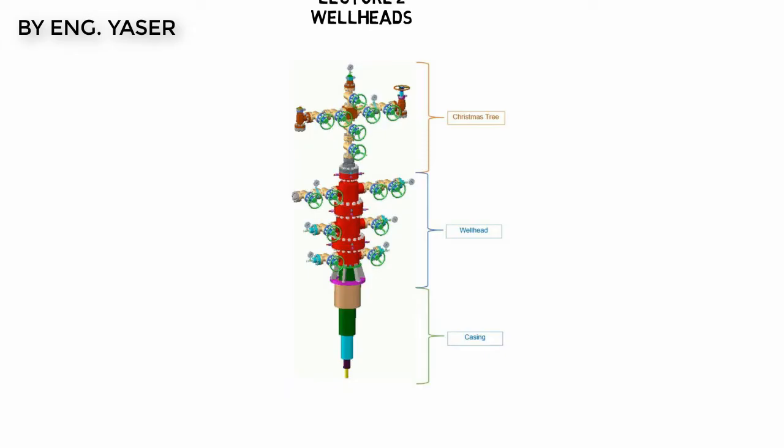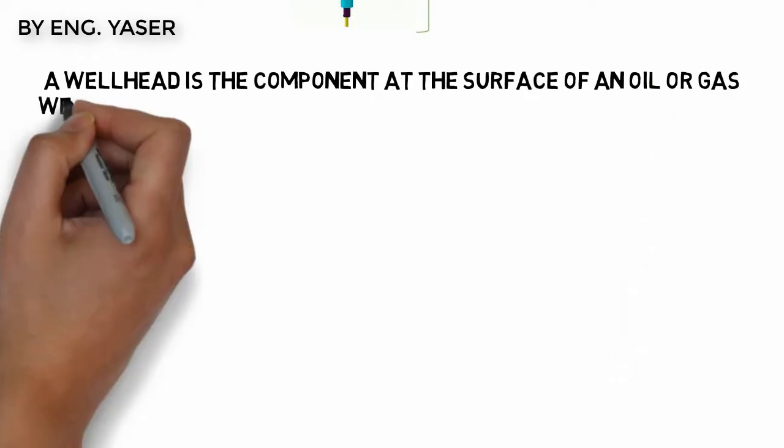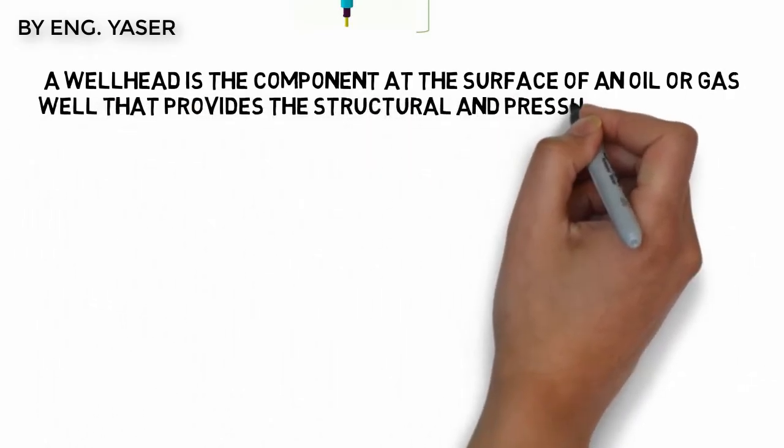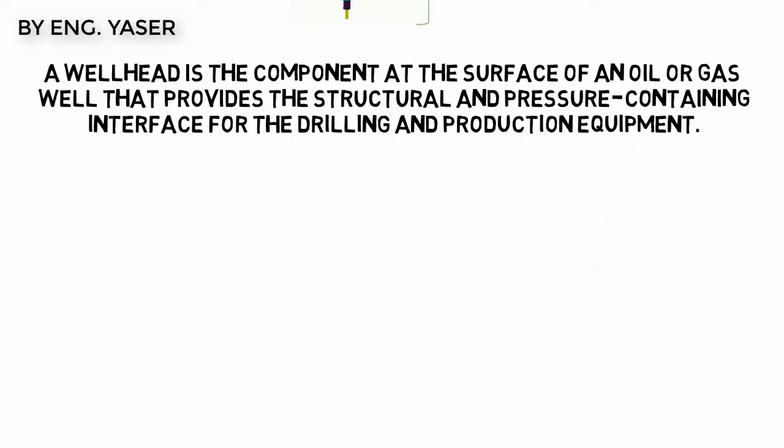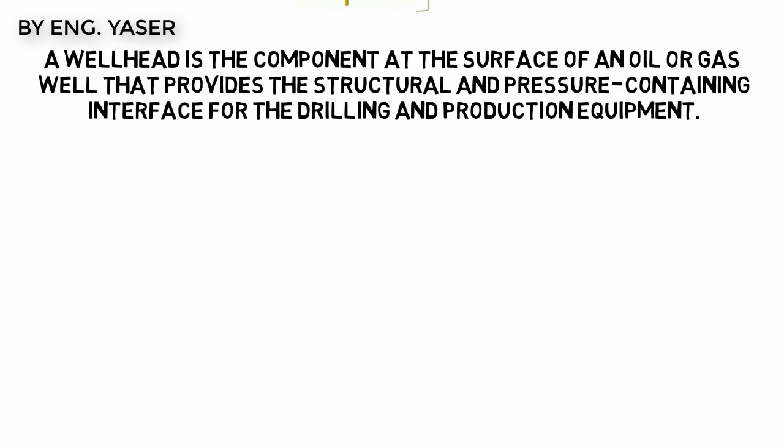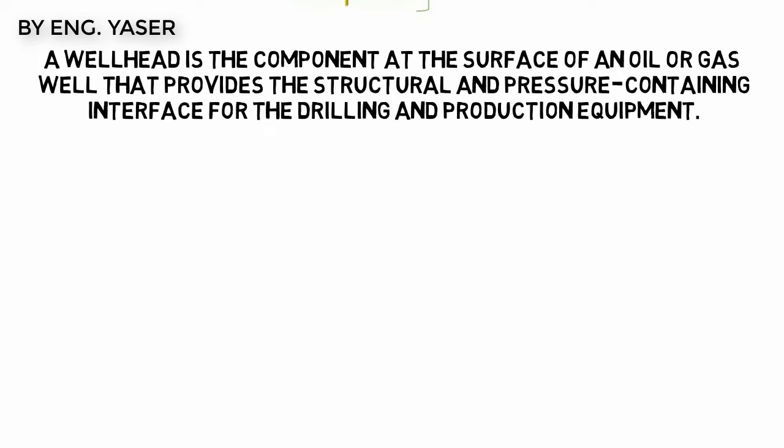A wellhead is the component at the surface of an oil and gas well that provides the structural and pressure-containing interface for the drilling and production equipment. The primary purpose of a wellhead is to provide the suspension point and pressure seals for the casing strings that run from the bottom of the hole sections to the surface pressure control equipment.